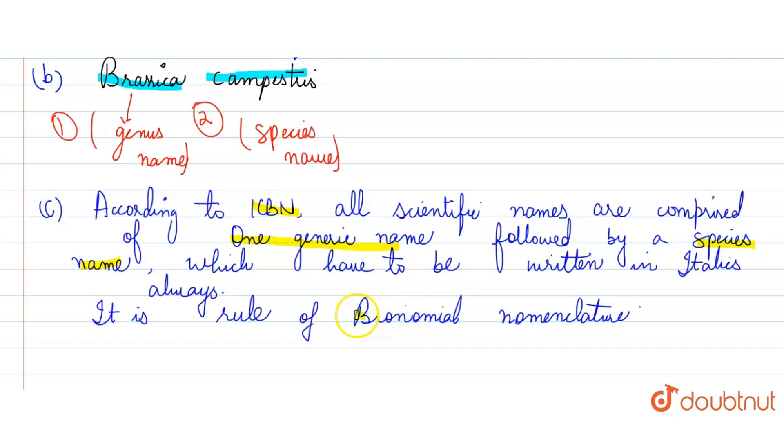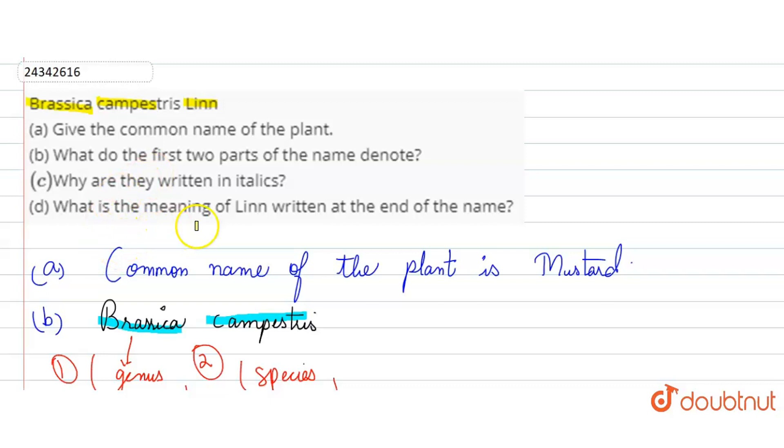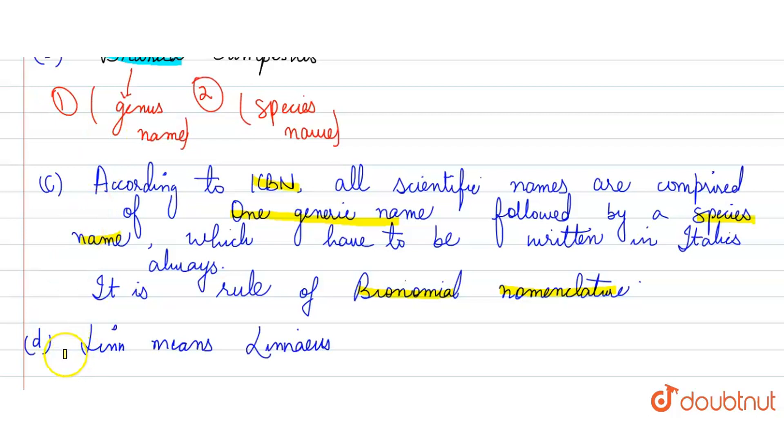So, we have the last part. What is the meaning of Lin written at the end of the name? If we look at our question, Brassica campestris. Here, the last part is Lin. So, let us tell what Lin means. Lin means there.